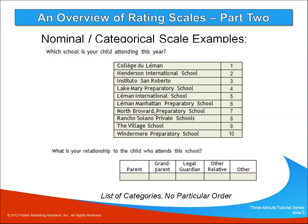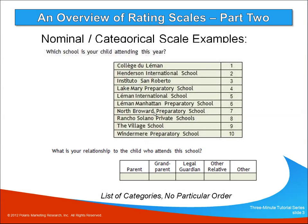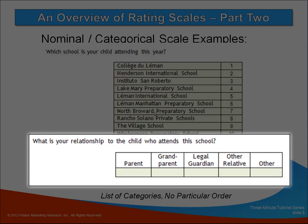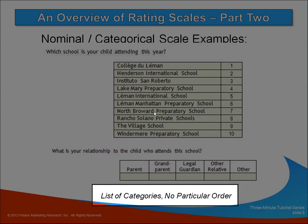The first question we asked parents was which school their child attended. Clearly these are just categories — each school is unique but there's no ranking difference between them. Another question we asked is what is your relationship to the child, and the choices are parent, grandparent, legal guardian, etc. Clearly these are unique categories but there's no particular order.